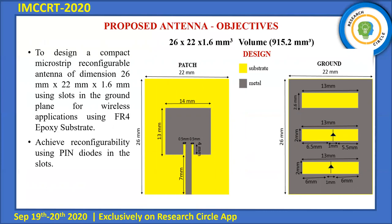Coming to the proposed antenna, we designed a very compact microstrip antenna of size 26×22×1.6 mm, bearing a volume of 915.2 mm³. The yellow portion shows the substrate, whereas the gray portion shows the metal. The substrate used here is FR4 epoxy, which has a dielectric constant of 4.4. The reason for choosing this substrate is cost — it has very low cost and is also highly resistant to corrosion.